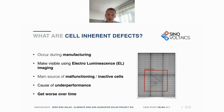Micro cracks inside solar cells are the cause of malfunctioning and inactive solar cells. Such defects can create resistance and can cause the power output of your solar modules to drop.